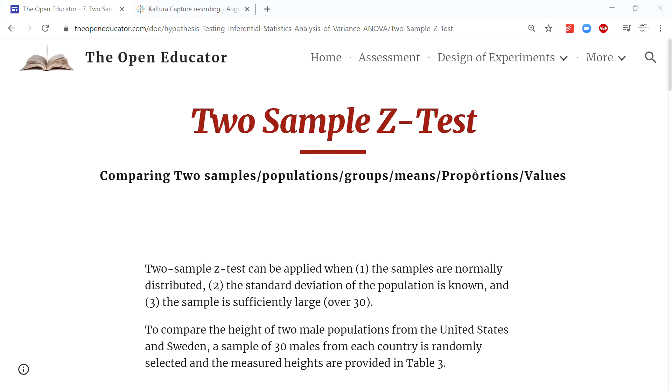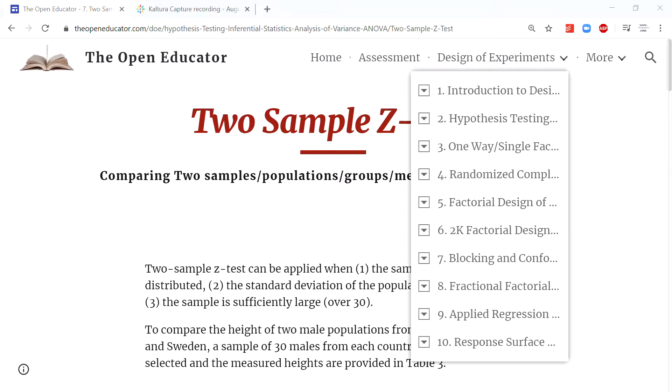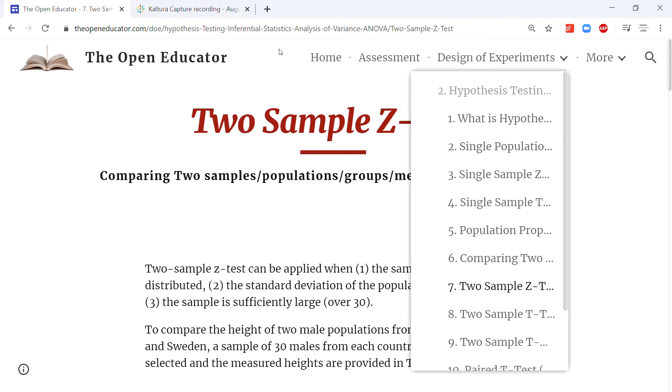To know more about the text explanation for this, you can go to theopeneducator.com, then under DOE Design of Experiments Module 2, click on the Two Sample Z-Test.